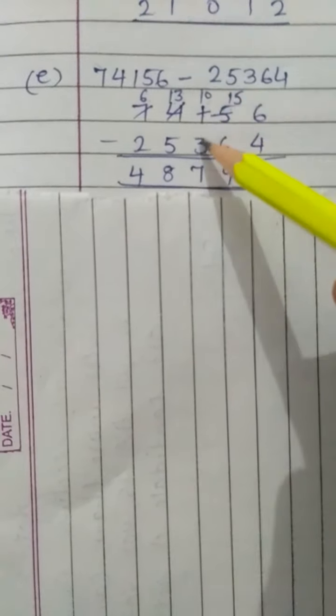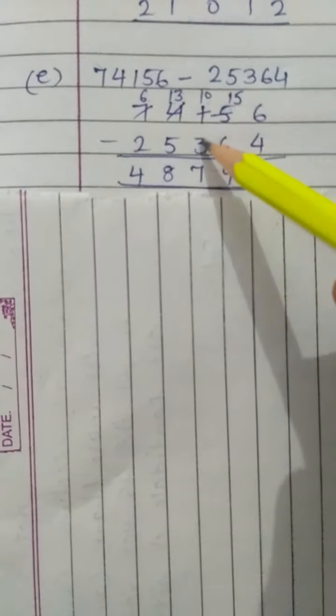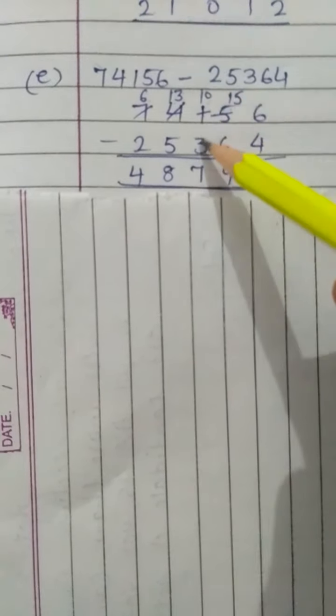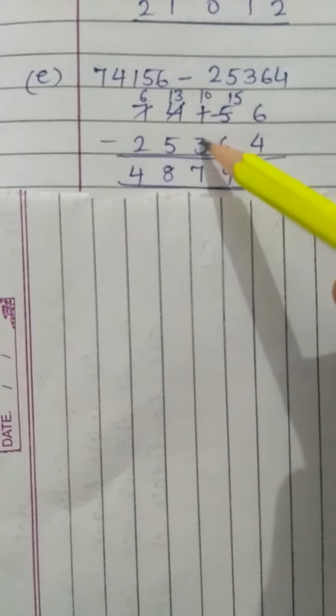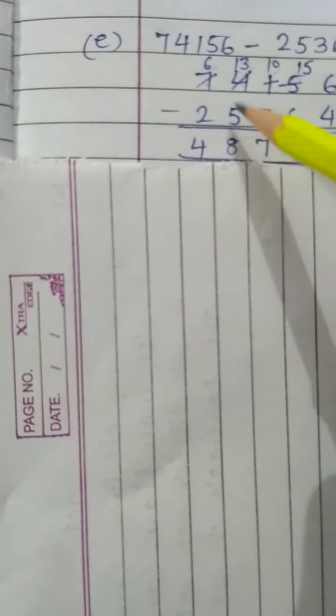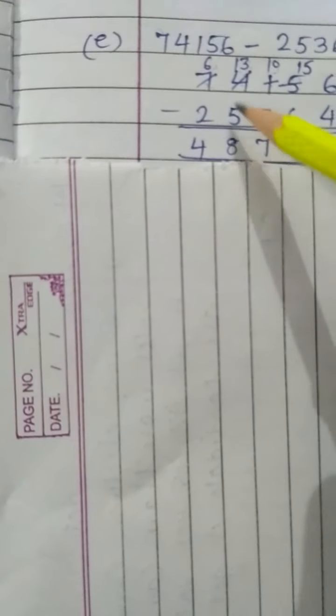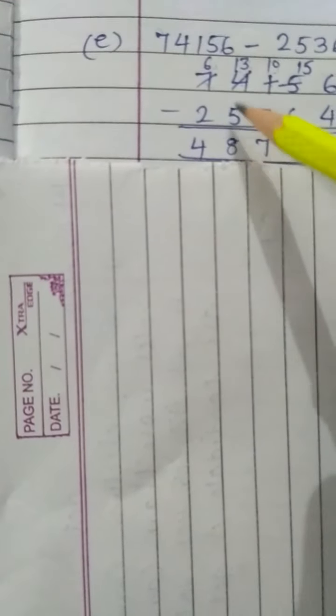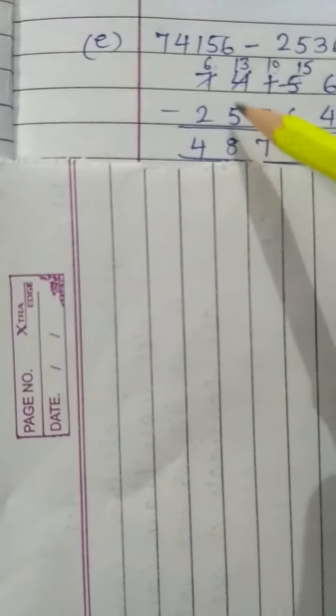In part C, 77,777 minus 42,424. 7 minus 4 is 3, 7 minus 2 is 5, 7 minus 4 is 3, 7 minus 2 is 5, and 7 minus 4 will be 3. So the answer is 35,353. Because this is easy subtraction, you can do it easily.